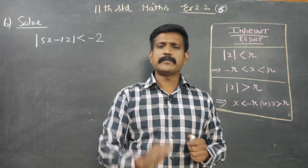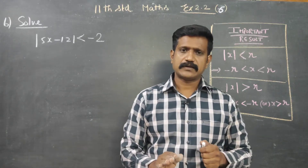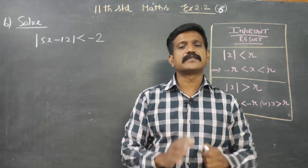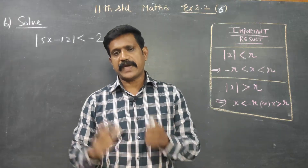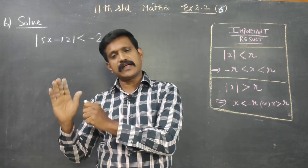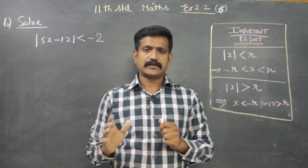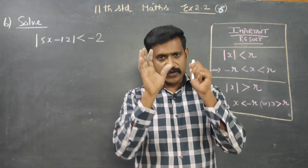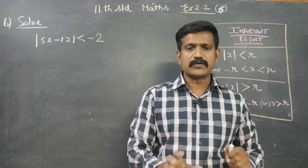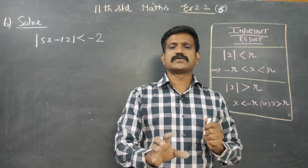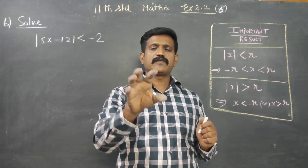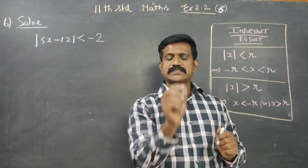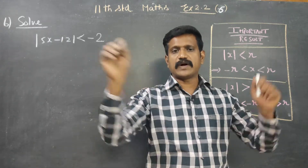Think of it like exam marks: the minimum mark is 0 and the maximum mark is 100. Similarly, the absolute value extends from 0 to positive values — that is the nature of absolute value in mathematics.